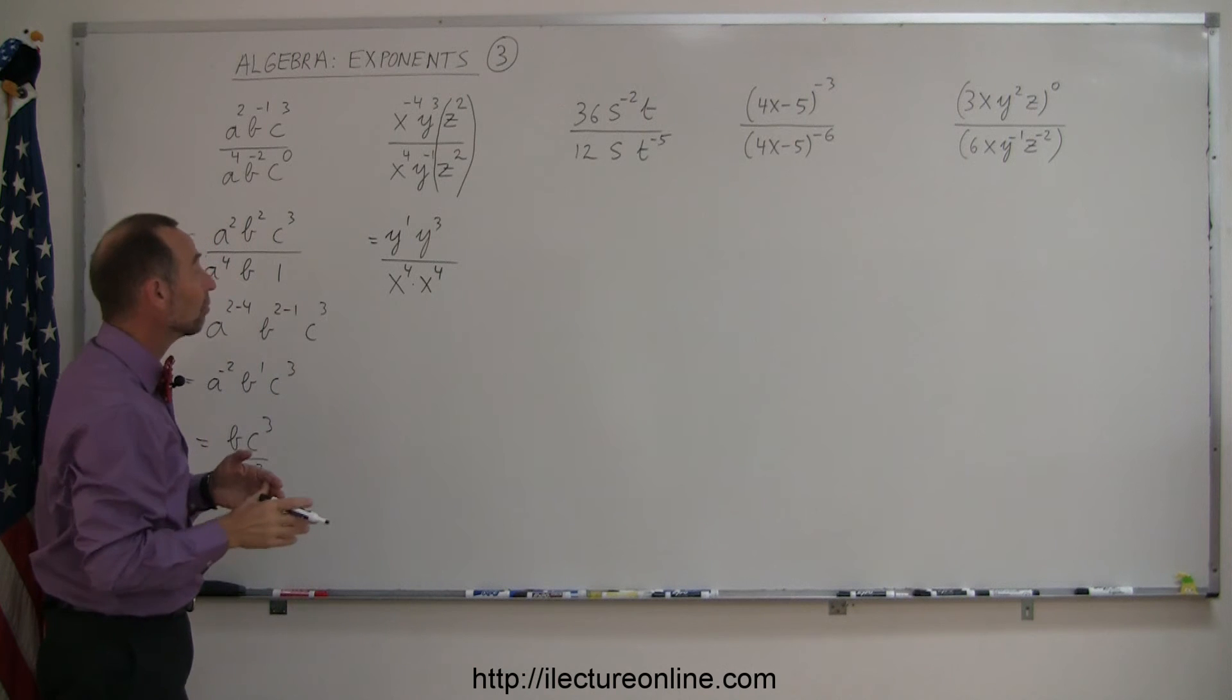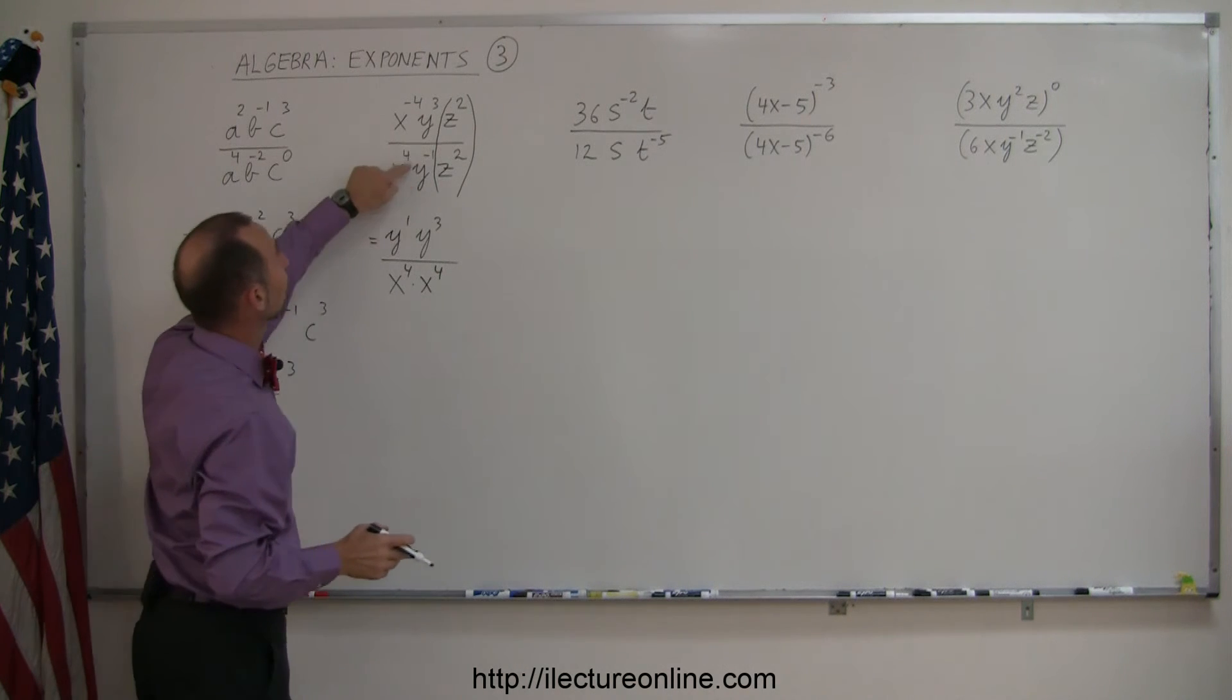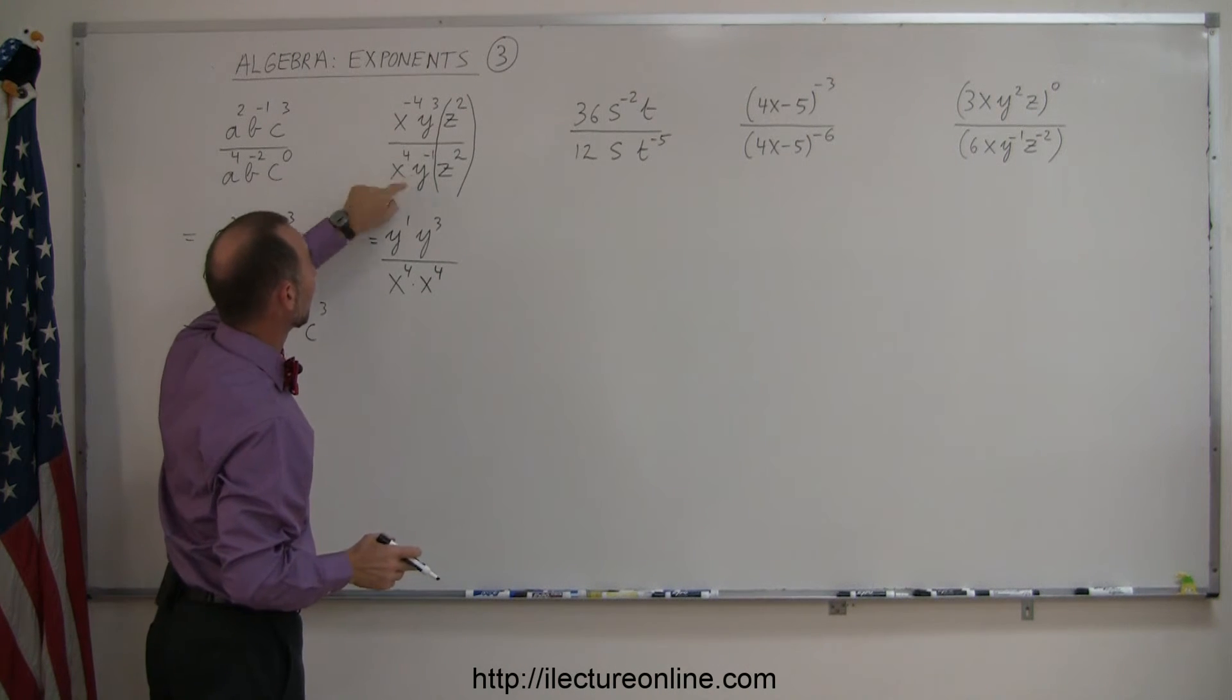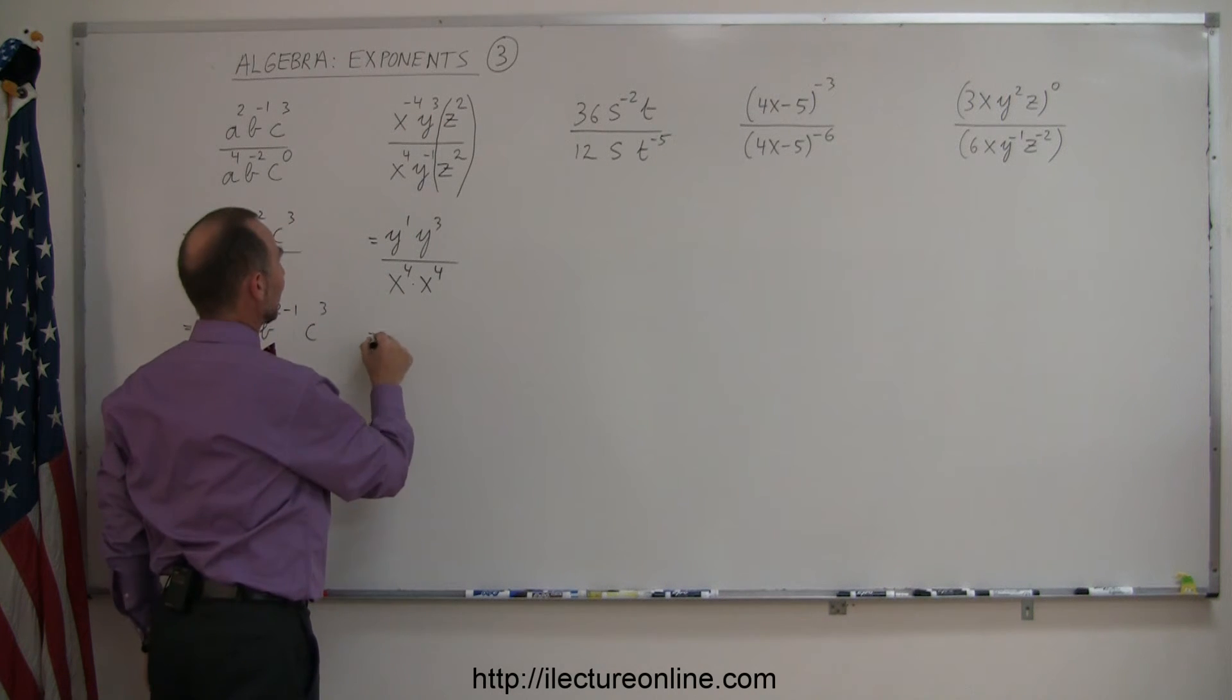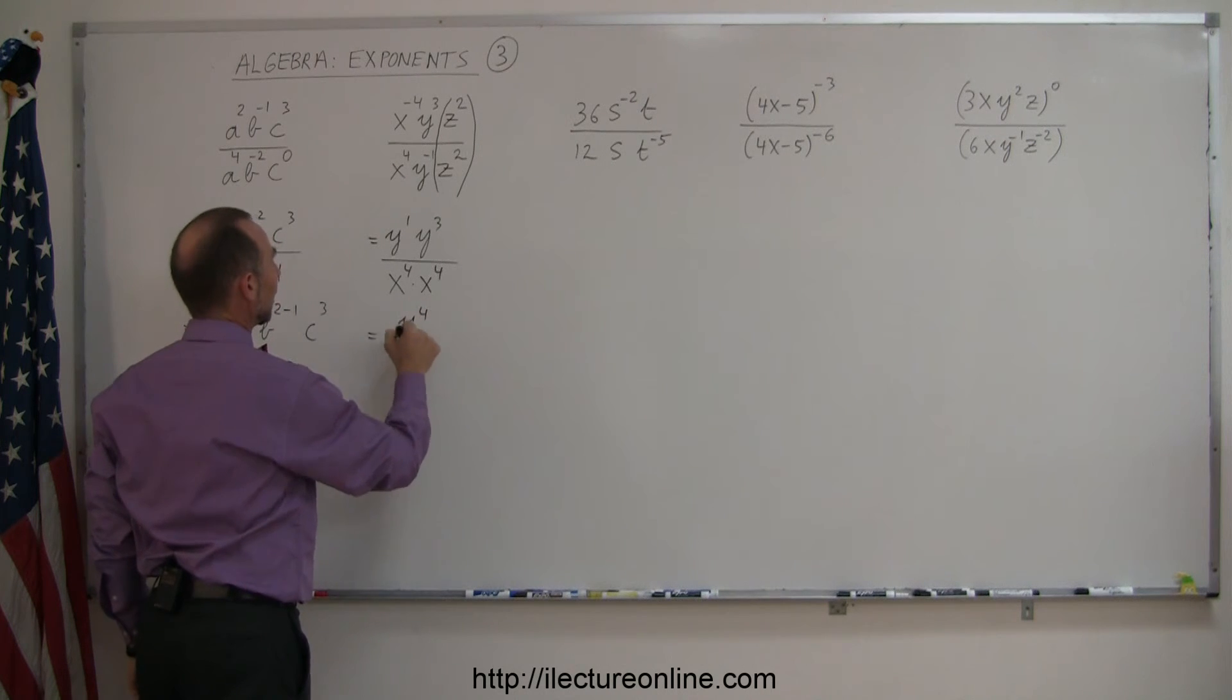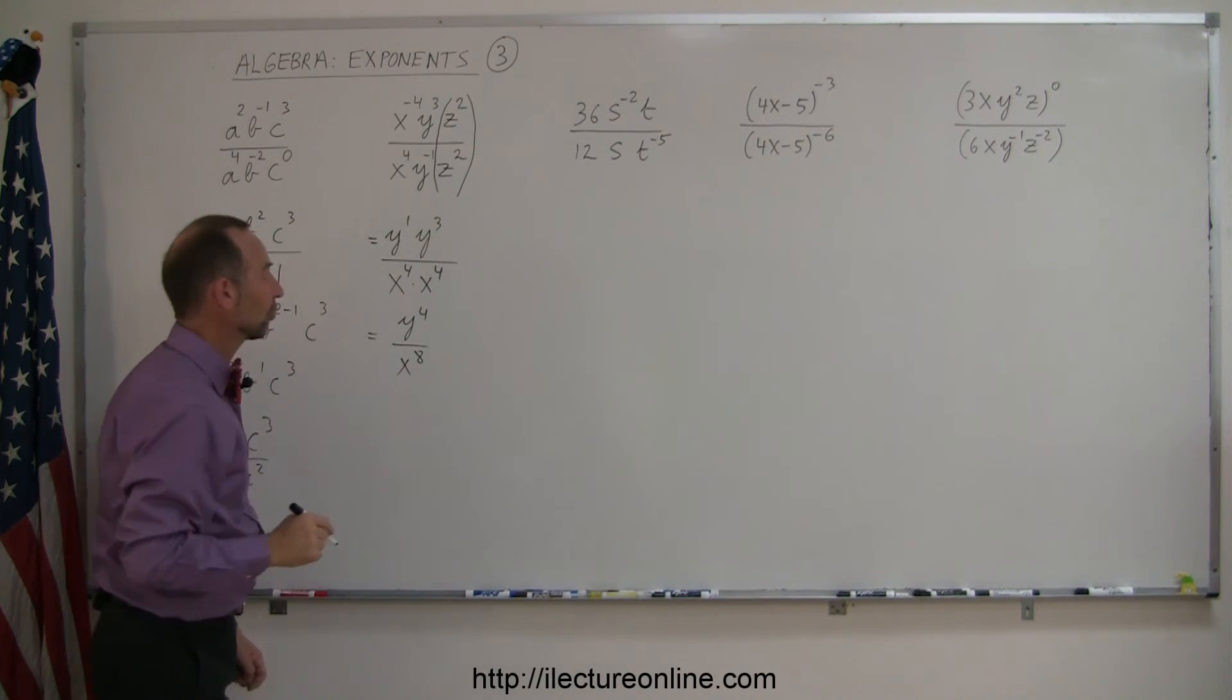So I don't have to do that, but that's one way. Simply moving this one up to make it positive. Move this one down to make it positive. This is equal to 1, and now I can simply simplify that. This is y to the fourth power divided by x to the eighth power by simply adding the exponents together.